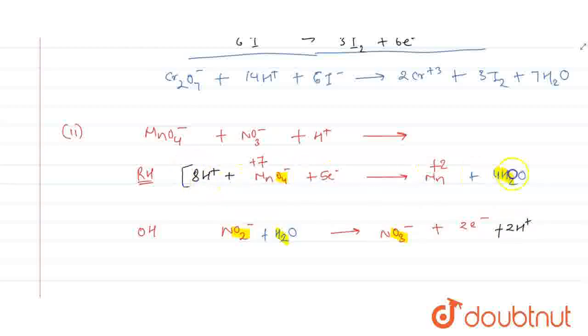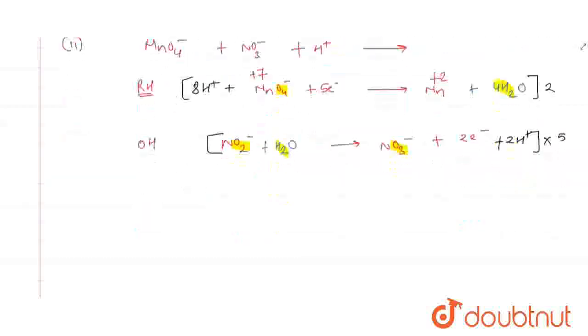So to balance it, I will multiply this equation by 5 and this with 2 and add the reactions.